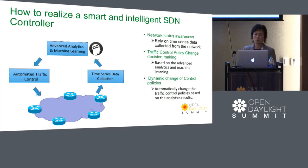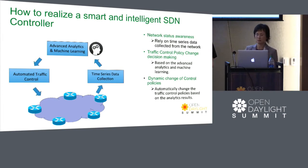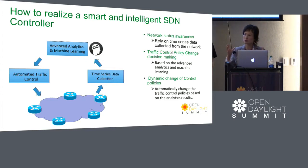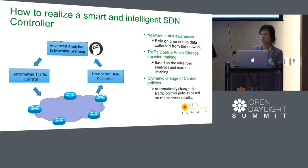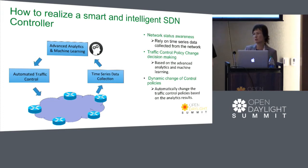At a high level, here is how it's going to work. At the bottom you can see the network. We have time series data collection continuously collecting data from the network, then feeding it to the advanced analytics and machine learning construct — the ODL AI/ML framework. After analyzing and applying machine learning algorithms, it generates results and feeds back to other services like GBP, VPN, and SFC that can configure the network, replace policies, and steer traffic on the fly.